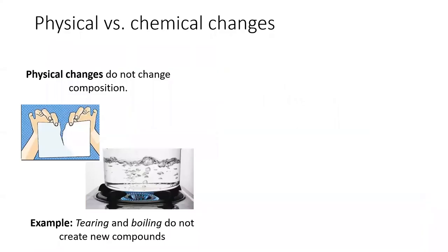When deciding whether something is a physical or chemical change, we want to think about whether a new compound is created. Physical changes do not create new compounds, although they may change how the compound is organized. For example, ripping or crumbling paper is a physical change. The paper is in a different shape, but nothing about the paper molecules has fundamentally changed.